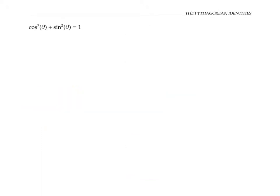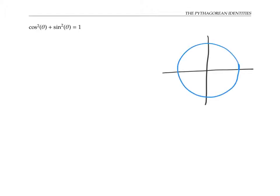Let's start by proving that cosine squared theta plus sine squared theta equals one. I'll do this by drawing the unit circle with a right triangle inside it. By the definition of sine and cosine, the x and y coordinates of this top point are cosine theta and sine theta.